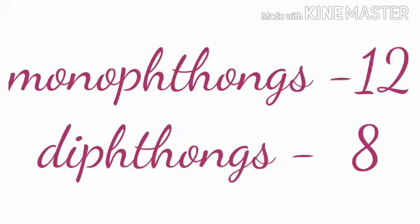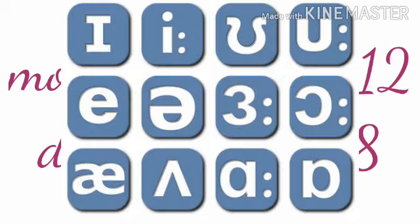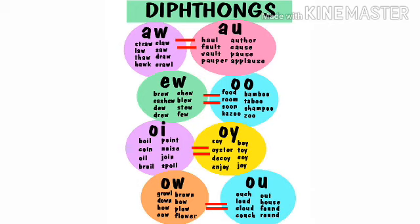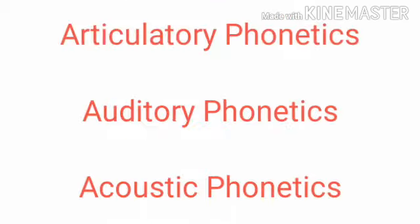The 20 vowel sounds are further divided into two types: monophthongs and diphthongs — 12 monophthong sounds and 8 diphthong sounds. Next, we look at the types of phonetics. There are three main branches of this discipline.